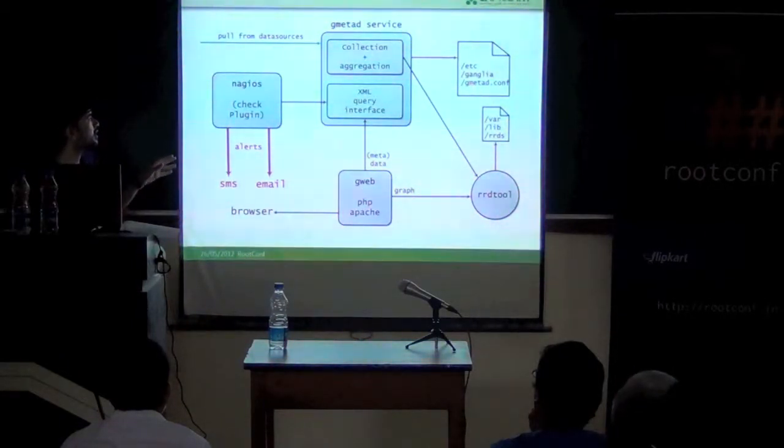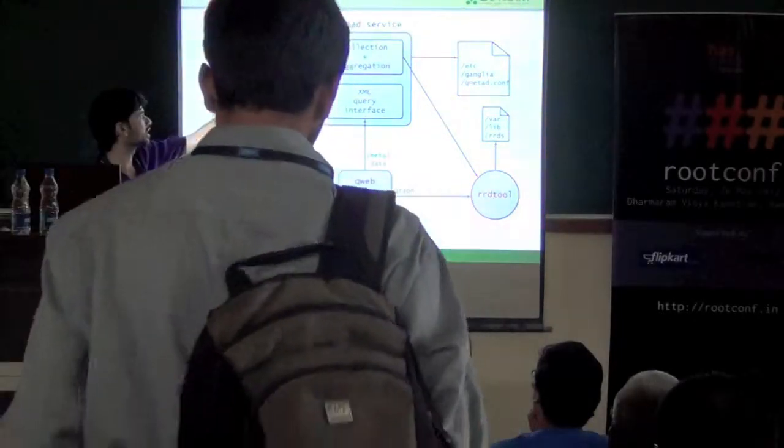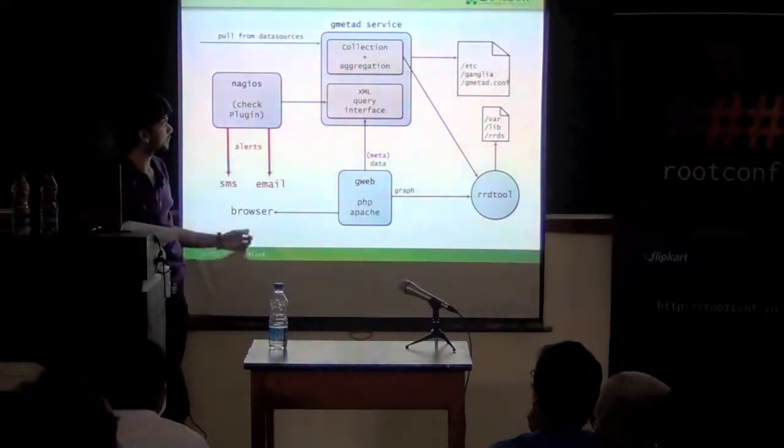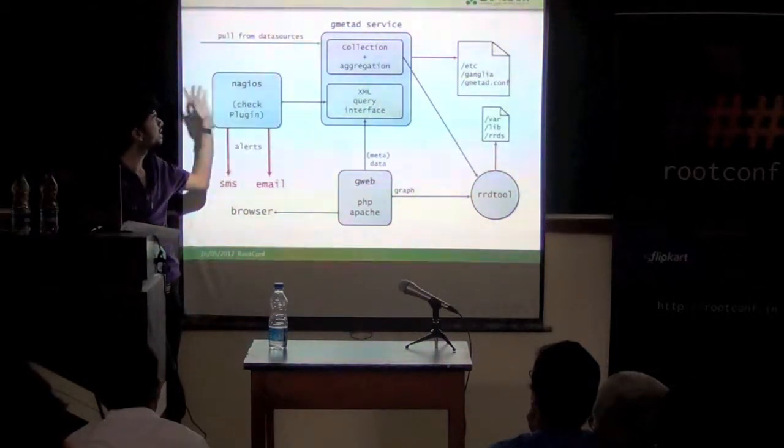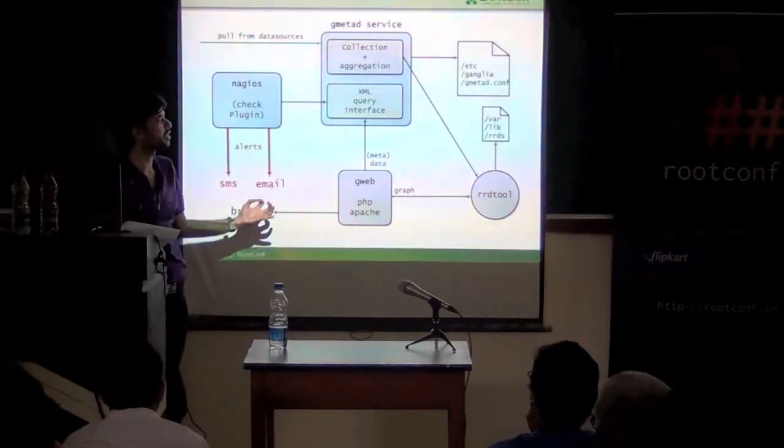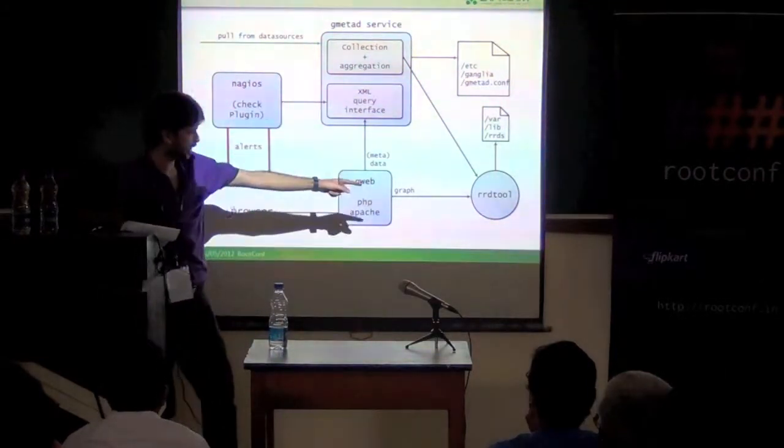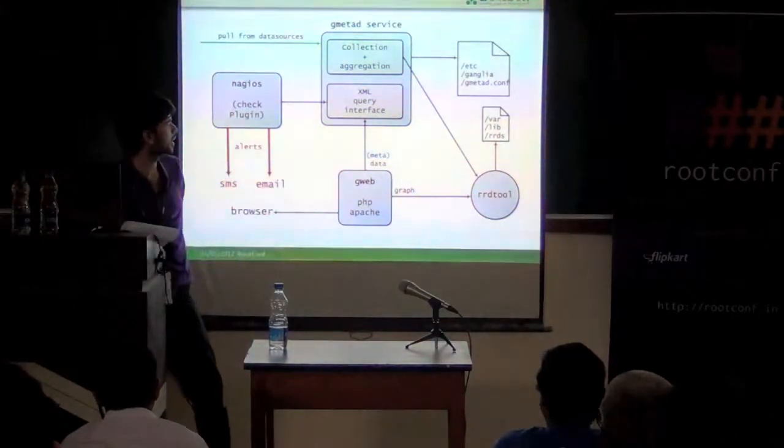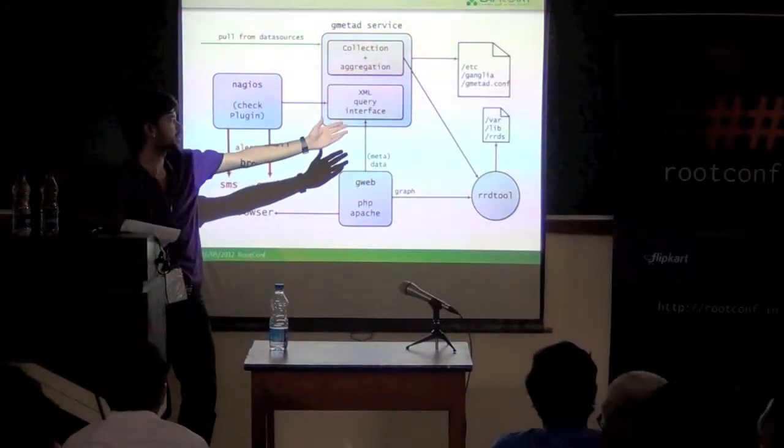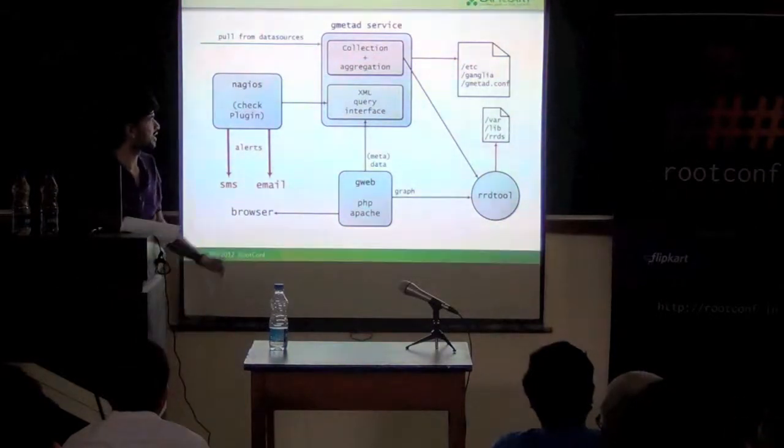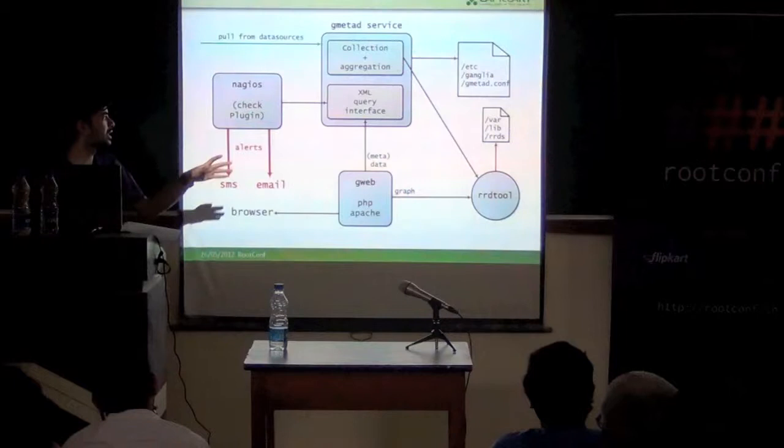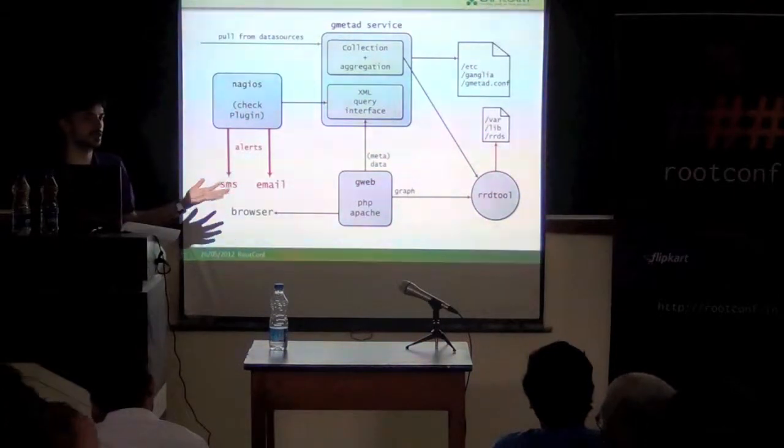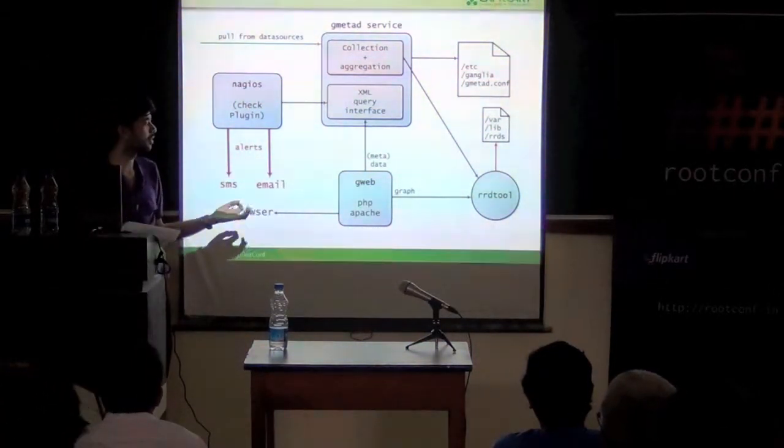The other end where all the data coming from GMOND is collected is called the GMETAD service. This runs as a normal Linux service and has two major ends: the collection and aggregation ends. It collects all the data, sums up data and builds various summary information, then passes the data to the RRD tool to store it in round-robin database files. The tool stores it in /var/lib/ganglia/rrds. GMETAD picks up its configuration from /etc/ganglia/gmetad.conf.